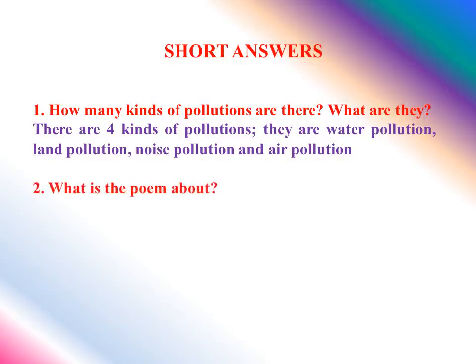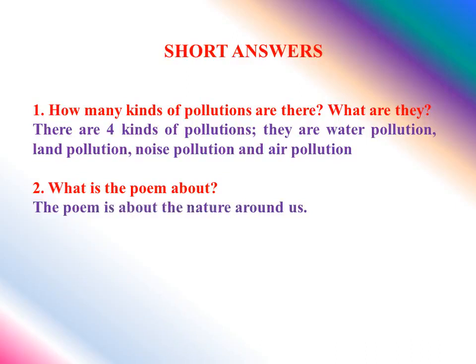So the poem is about the nature around us. Third question: list the natural things mentioned in the poem. The natural things mentioned in the poem are trees — the poet was looking at the trees and garden, lands, flowers, rivers, sky, and sea. These are the natural things mentioned in the poem.